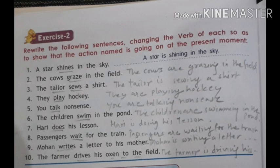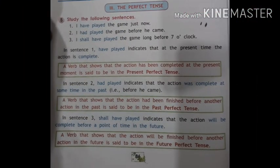Number seven: 'Hari does his lesson' becomes 'Hari is doing his lesson.' Eight: 'Passengers wait for the train' becomes 'Passengers are waiting for the train.' Nine: 'Mohan writes a letter to his mother' becomes 'Mohan is writing a letter to his mother.' Ten: 'The farmer drives his oxen to the field' becomes 'The farmer is driving his oxen to the field.' So we change simple present tense into continuous tense by using a helping verb and the base verb plus -ING.